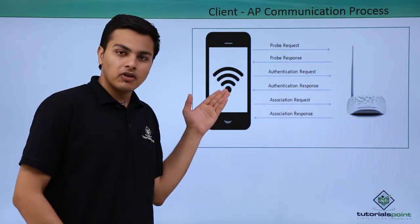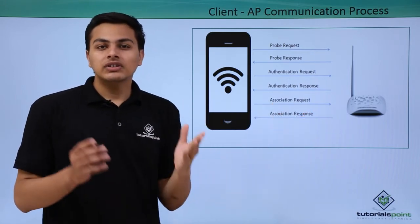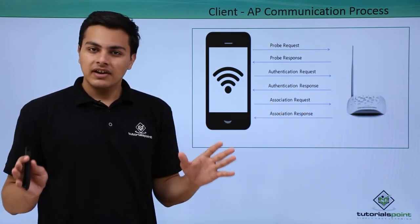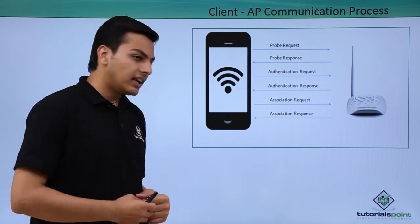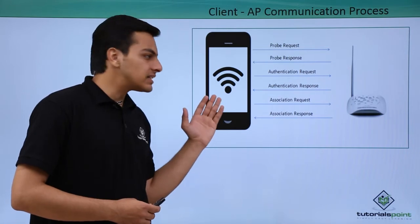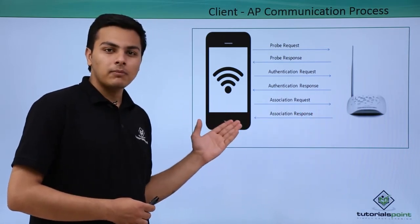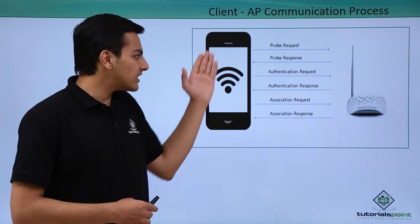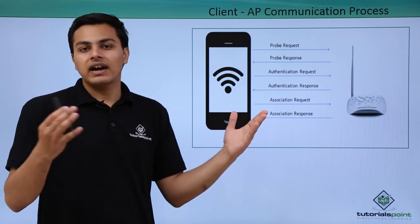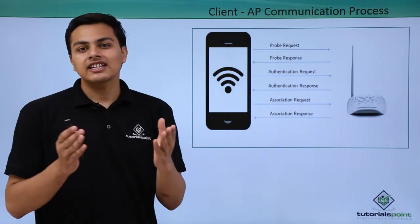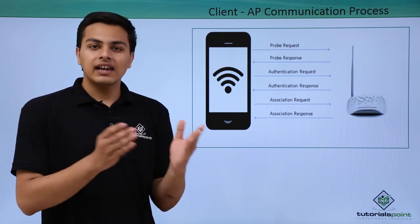Once the authentication response is received by our client, the client will send an association request. The association request means: 'Okay, we are connected — now let's start transferring some data.' The client will wait for an association response from the access point. These are the six steps needed for communication to take place between our client and a wireless access point.